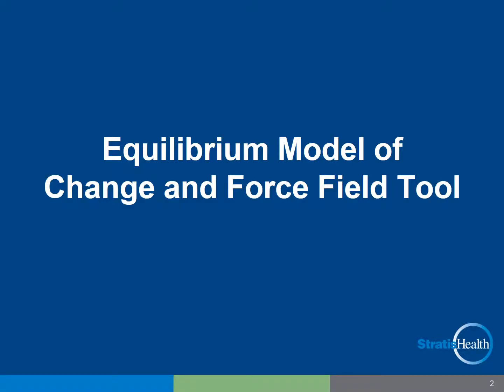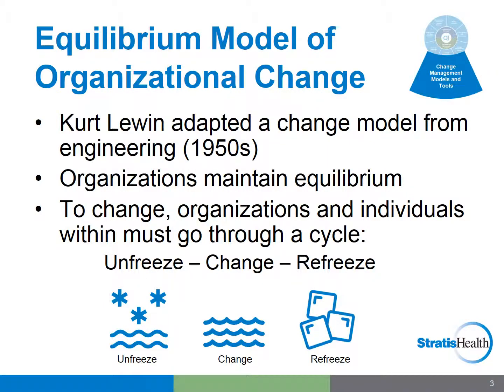Let's now look at change from the organizational equilibrium model perspective. Kurt Lewin, often recognized as the founder of social psychology, was one of the first to study group dynamics and organizational development. He adapted a change model from engineering in the 1950s, proposing that organizations must maintain a certain equilibrium to maintain the health and viability of the organization. In order to change, he proposed that organizations must go through a three-step cycle: unfreeze, change, then refreeze.